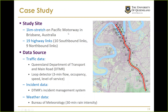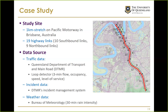The study area was a one-kilometer stretch on the Ipswich Motorway in Brisbane, including 19 highway links covering both directions. Data sources include traffic data from loop detectors collected at three-minute intervals from the Queensland Department of Transport and Main Roads, incident data, and weather data at 30-minute resolution matched to three-minute resolution.